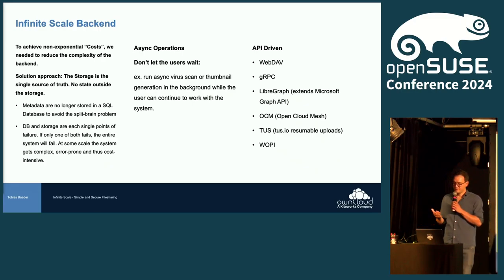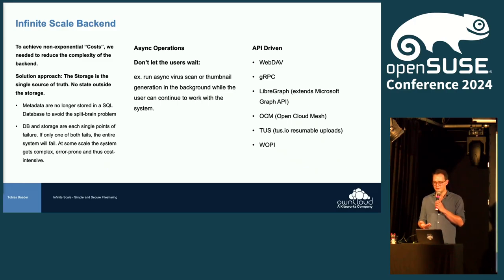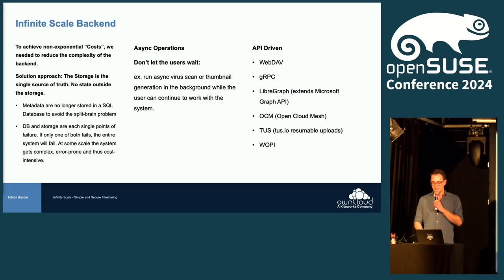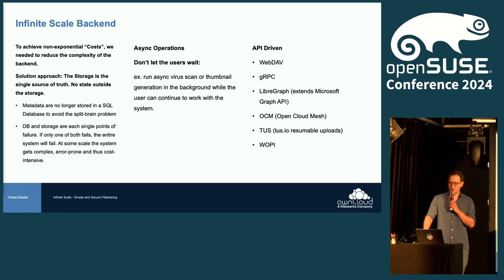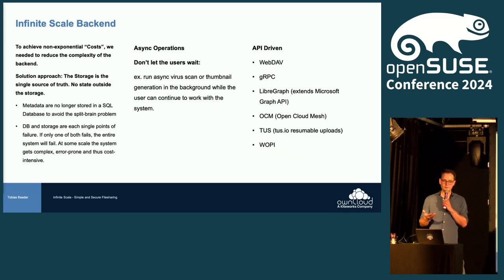Perhaps the most important thing is that everything is designed API-driven. Here are some examples: we use WebDAV and gRPC for inter-service communication; LibreGraph, which extends the Microsoft Graph API; OCM — the Open Cloud Mesh — so you can share files between instances, for example with C-File and Nextcloud; TUS for resumable uploads; and the WOPI protocol from Microsoft for live collaboration on Office document files, also used by OnlyOffice and Collabora.